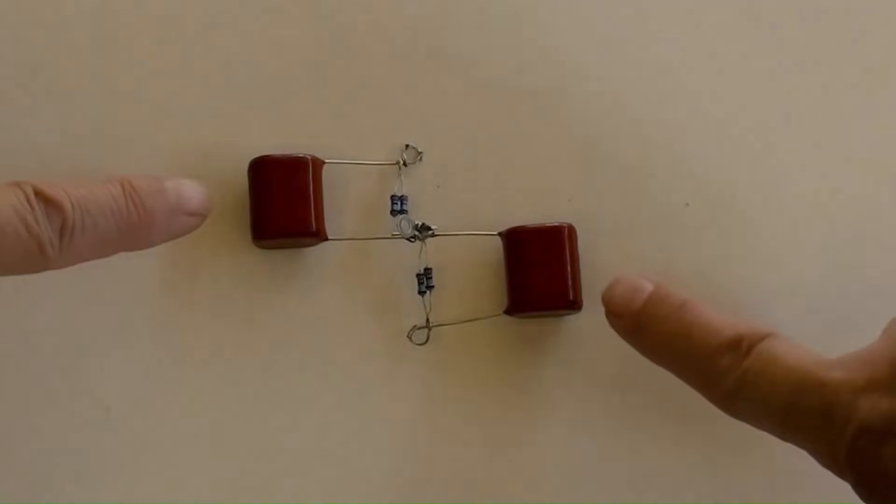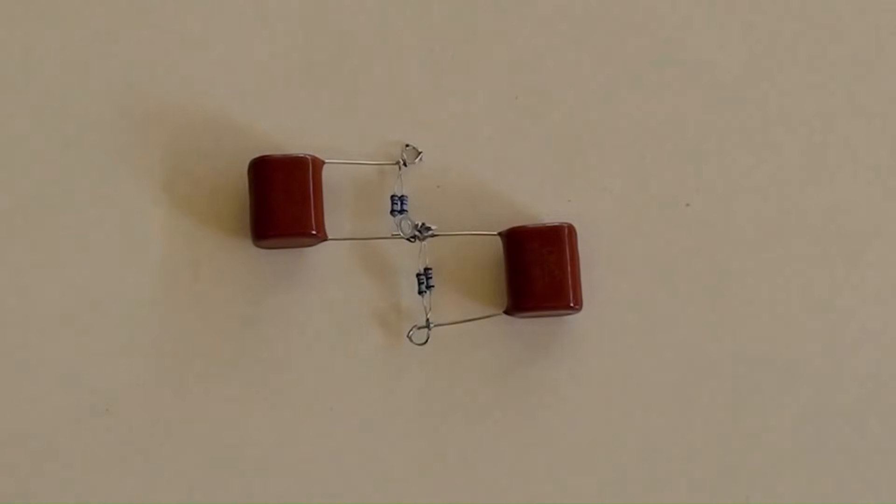Here we go, they have been soldered together. Two capacitors are connected in series, two resistors are connected in series as well, then all of their ends are crossly connected.